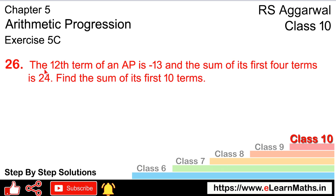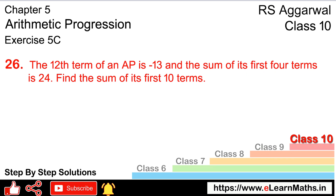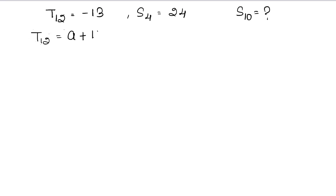Let's do question number 26 of exercise 5c, that is arithmetic progression. Question number 26: the 12th term of an AP is minus 13, and the sum of first 4 terms is 24. Find the sum of first 10 terms.